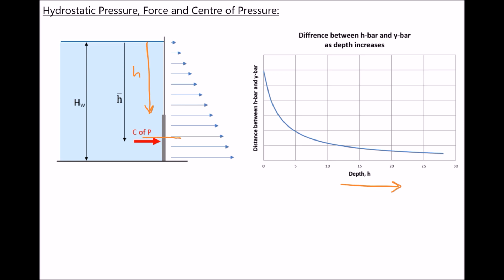The reason the centre of pressure gets closer to the centroid is because the difference in the effects of the pressure field above the centroid and below the centroid is now much smaller. Above the centroid we have pressure causing a turning moment, and we have pressure due to the full height of the fluid causing a turning moment below. But the effects are somewhat diminished because we already have a large body of fluid above the submerged surface.